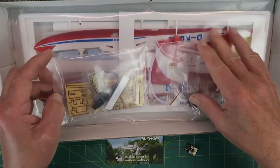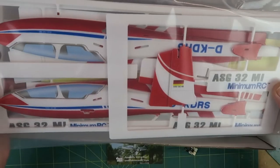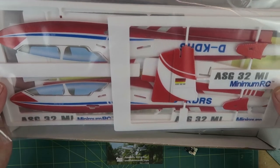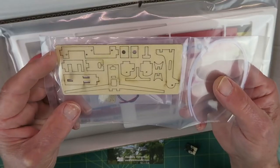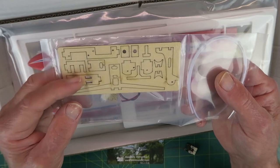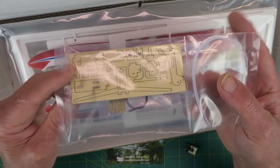The kit for the glider is very simple. A bunch of nicely pre-cut foam pieces, as we've seen before with the Minimum RC kits, and some nice laser cut ply pieces.